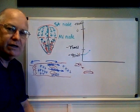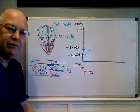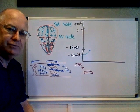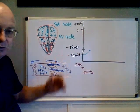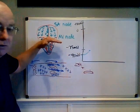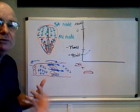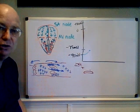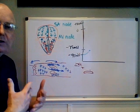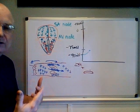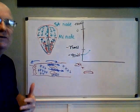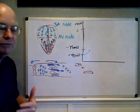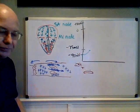In pediatrics, kids have a slightly faster heart rate. The AV node actually depolarizes more slowly — it has fewer leaky channels, and therefore it hits threshold about 60 beats per minute.